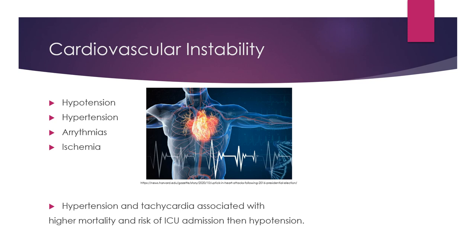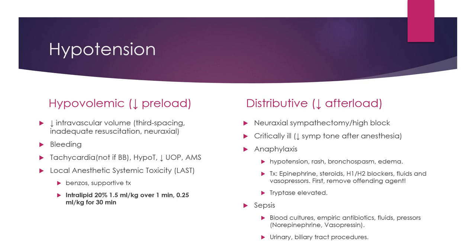Cardiovascular instability is another common disturbance in the PACU, including hypotension, hypertension, various arrhythmias, and ischemia. Interestingly, hypertension and tachycardia are associated with higher mortality and risk of ICU admission than hypotension. Hypotension can be divided into hypovolemic, distributive, cardiogenic, and extracardiac obstructive. Hypovolemic hypotension occurs due to decreased preload — most commonly from third spacing and inadequate resuscitation during long surgeries, effective volume decrease from neuraxial anesthesia, or bleeding. These patients present with hypotension and tachycardia, though beta-blocker use may mask the tachycardia; urine output is decreased and altered mental status may develop in severe cases.